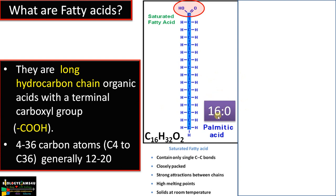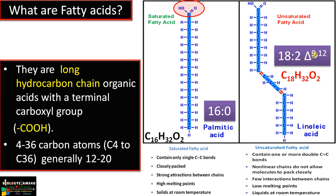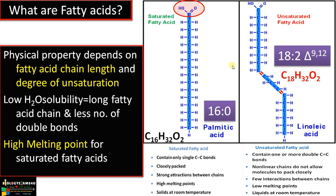The second type is unsaturated fatty acids. In the case of unsaturated fatty acids like linoleic acid, there will be double bonds — one or more. Linoleic acid is denoted as 18:2, indicating 18 carbon atoms and two double bonds at delta 9 and delta 12, indicating the position of the double bonds at the 9th and 12th carbon positions. Physical properties of fatty acids depend on chain length and the degree of unsaturation, or the number of double bonds.